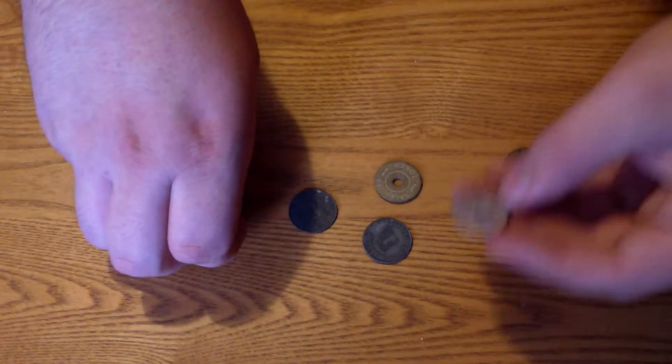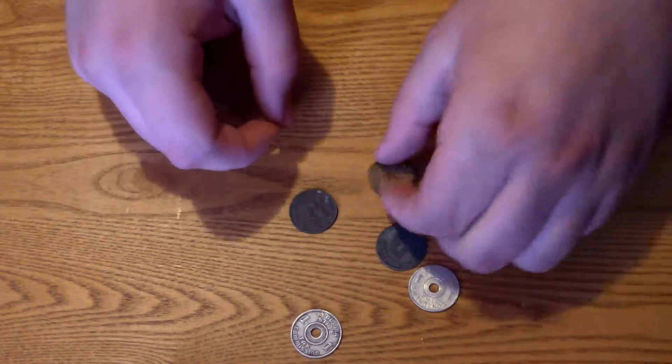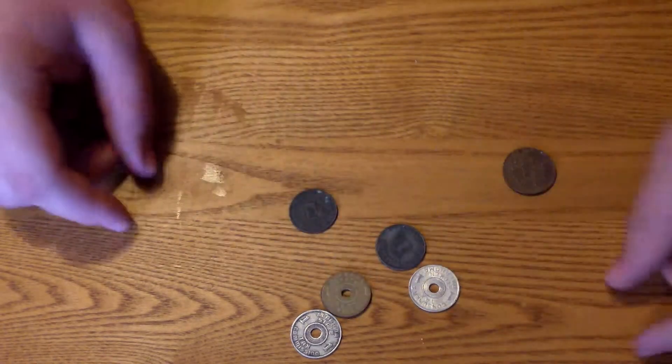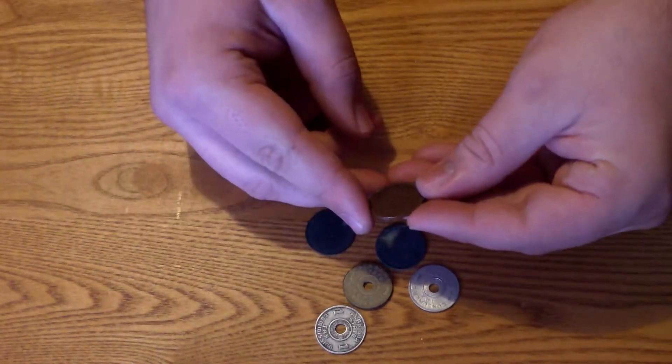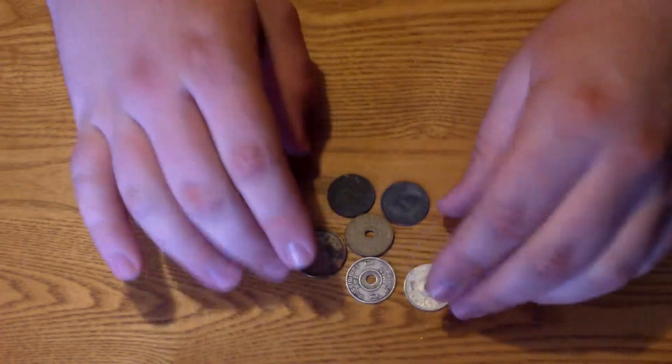And this one's actually plastic and it is a sales tax token as Alabama. That's pretty cool. And here I have a no cash value coin. It's pretty cool.